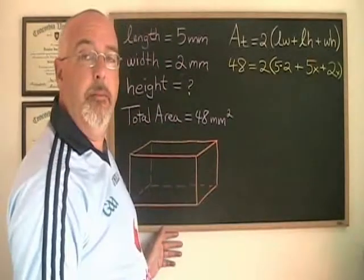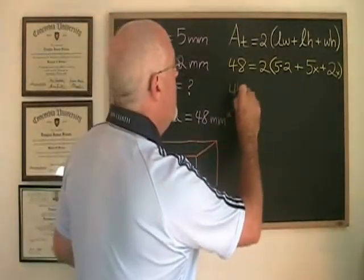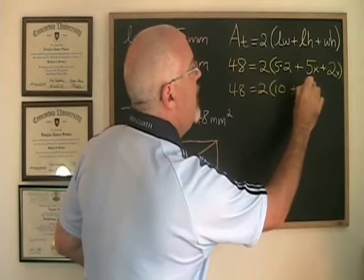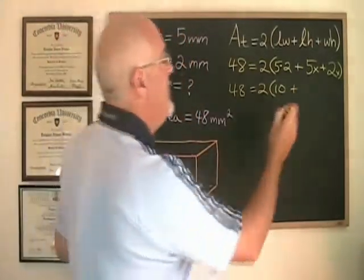And now, simplifying, 5 times 2 is 10, and 5x plus 2x is 7x.